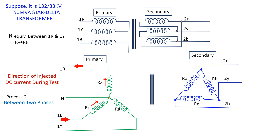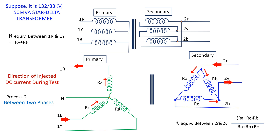On the delta side, we have no choice other than conducting the test using two phases. Here, the measured resistance will be the equivalent resistance of the three windings.